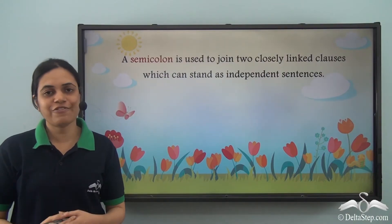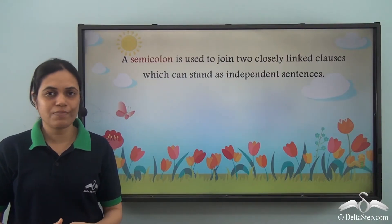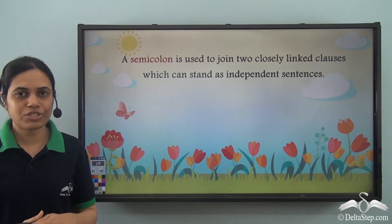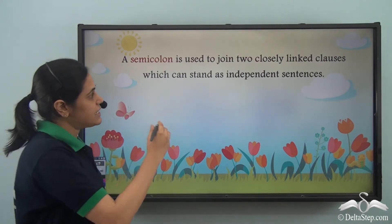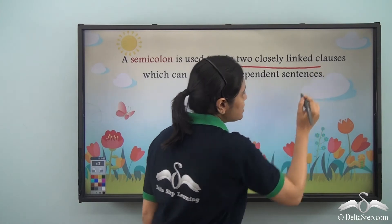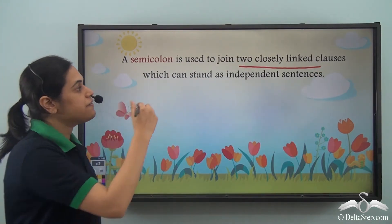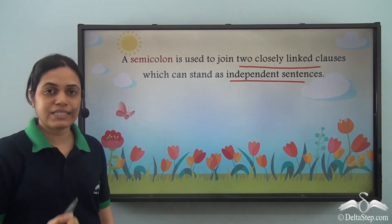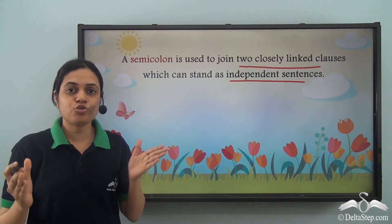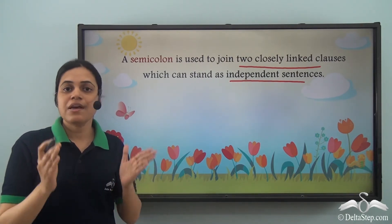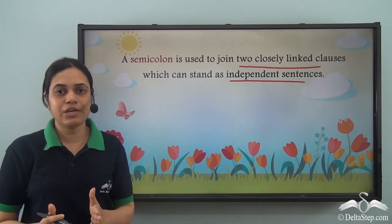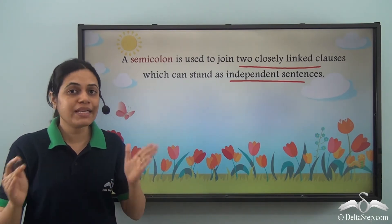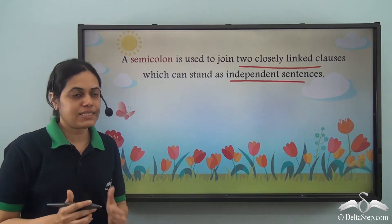We have learned the different punctuation marks. Now a semicolon is an important punctuation mark. It is used to join two closely linked clauses which can stand as independent sentences. So it is used to join two sentences which are closely related and makes them into one sentence.